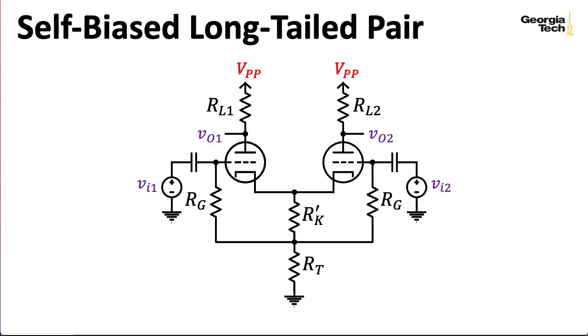The long-tailed pair has two inputs. VI1 here typically comes from the last pre-amplifier stage, and VI2, if you have it at all, usually provides negative feedback from the transformer that helps linearize the response of the amplifier, and we'll look at that in a future lecture. As far as V1 goes, an inverted version shows up at output 1, and a non-inverted version shows up at output 2. And similarly, as far as VI2 goes, an inverted version shows up at VO2, and a non-inverted version shows up at VO1.